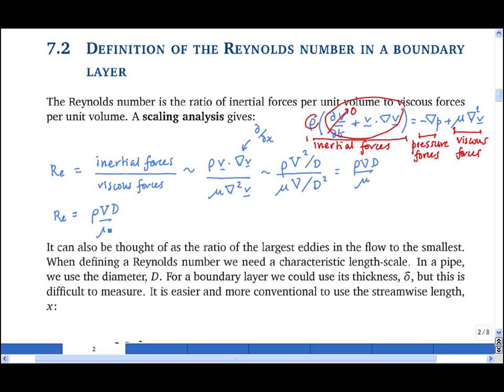Cancelling out gives rho v d upon mu. And so what I have is that the Reynolds number in general is rho v d upon mu, that is the ratio of inertial forces to viscous forces, where v is a characteristic velocity scale and d is a characteristic length scale.